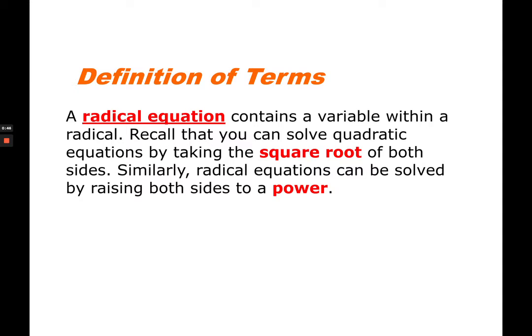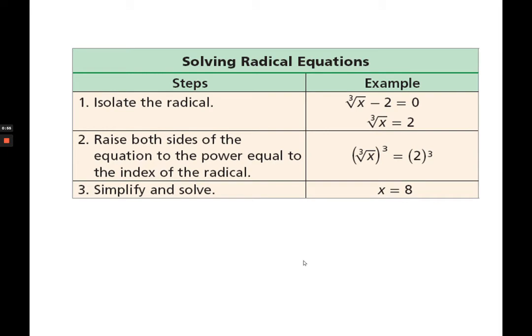To simplify your radical index or your given rational exponent, the steps are on the left side and a specific example is on the right side. The first step in solving a radical equation is to isolate the radical. In the given example, the radical part is your cube root of x. When you try to isolate that, there is a minus 2, so you will apply the addition of 2 on both sides. After addition, 2 appears positive on the right side, and you are able to isolate cube root of x on the left side.